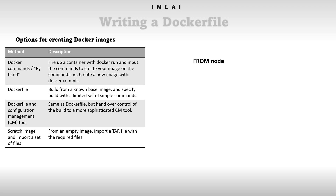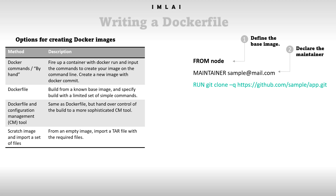A Dockerfile begins with FROM, which defines the base image. The argument given here is 'node', so this uses a Node.js image, giving access to Node.js binaries. The official Node.js image is called 'node' and will be pulled from Docker Hub. Next, you declare the MAINTAINER — this is now deprecated but still used. The MAINTAINER command takes your email address as an argument, just for reference.